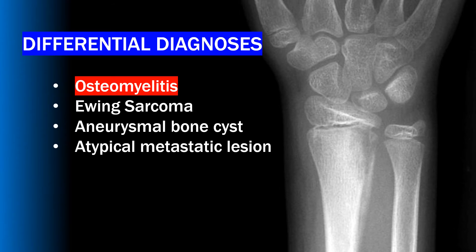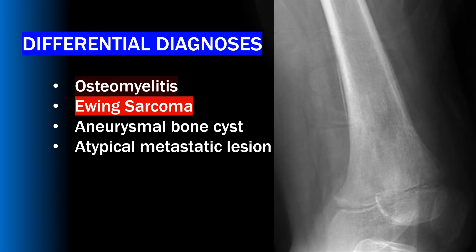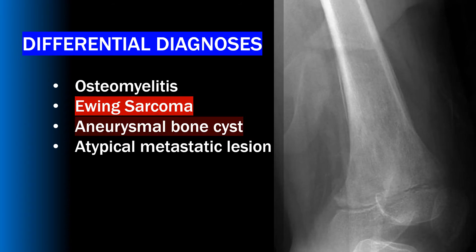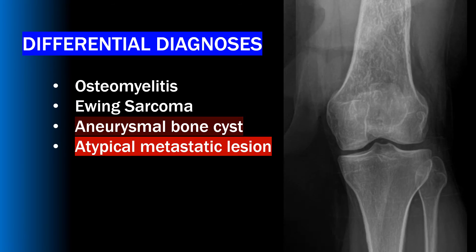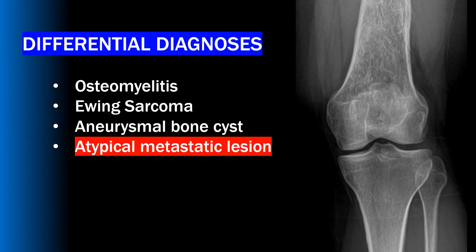Some differential diagnoses for osteosarcoma — conditions that present similarly from a clinical or radiographic perspective — include osteomyelitis or infection, Ewing's sarcoma, aneurysmal bone cyst, or other less likely atypical metastatic lesions.